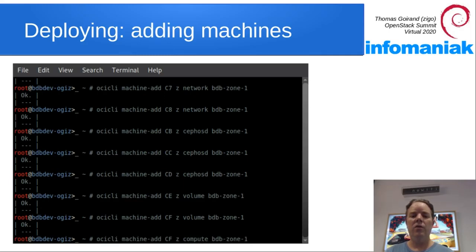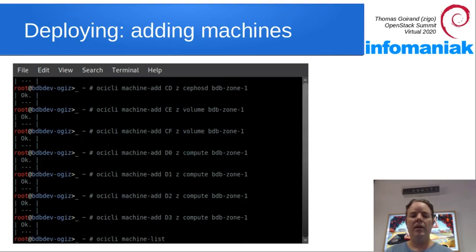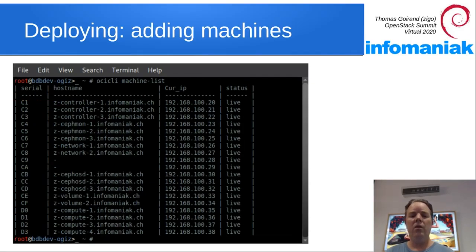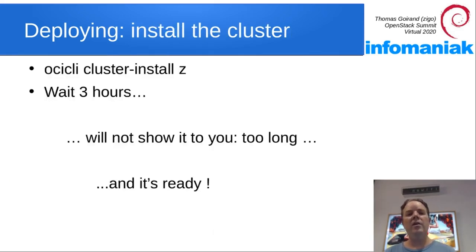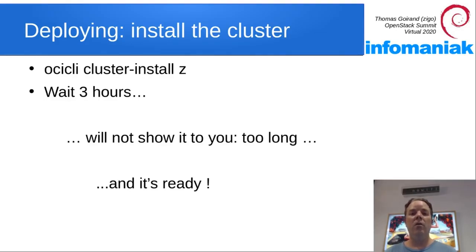Finally, some compute nodes — D1, D2, D3. Everything in OCI CLI has bash tab completion. Now we have all servers with hostnames pre-calculated and IP addresses already assigned. The next step is either `oci-cli machine install-os` with the hostname or serial number, or simply `oci-cli cluster install -z`. That will go through each machine one by one in the correct order, installing the OS first, then waiting for Puppet to run before moving to the next role — scheduled in a well-optimized order.